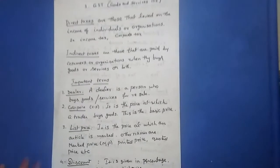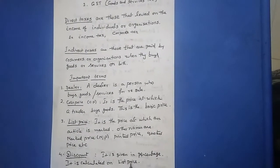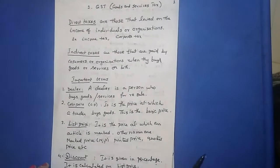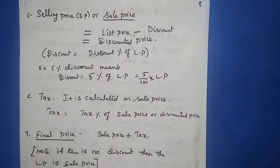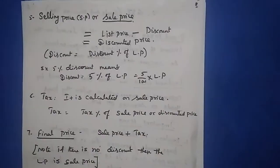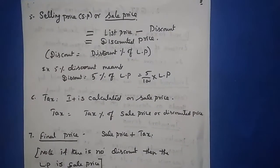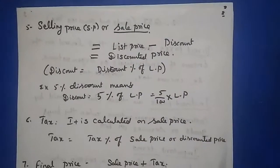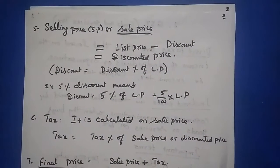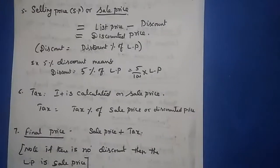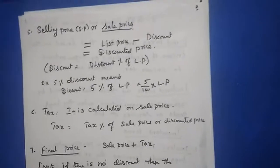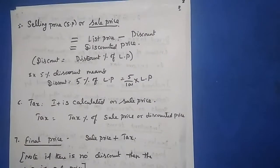Next is discount. After raising the price, the seller gives a discount as a percentage. Discount is calculated on the list price — discount equals discount percent of list price. The selling price, also called sale price or discounted price, equals list price minus discount. For example, a 5% discount means discount equals 5% of list price, i.e., 5/100 × list price.